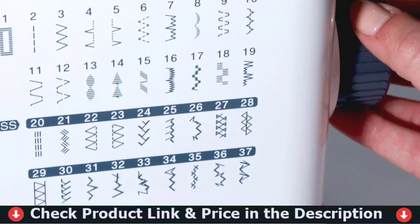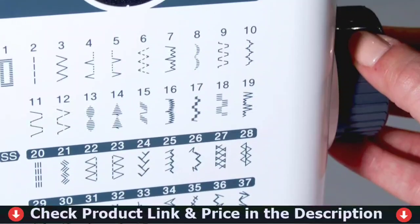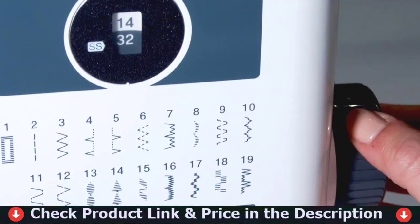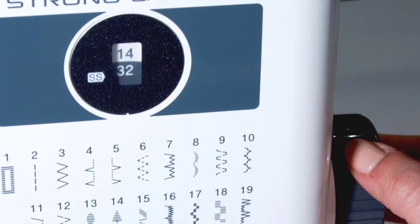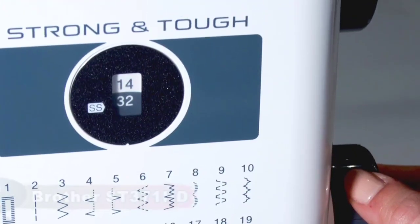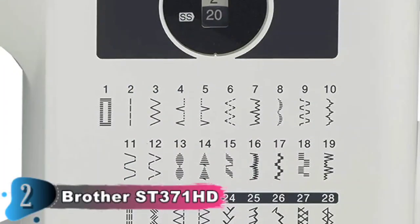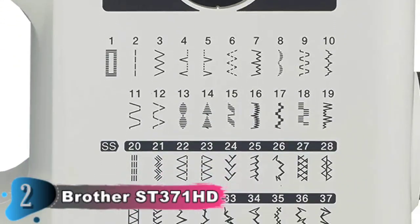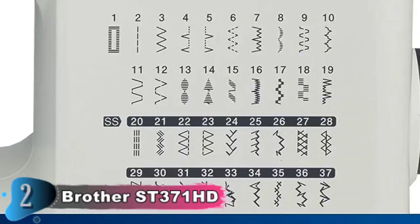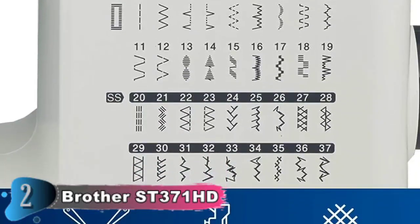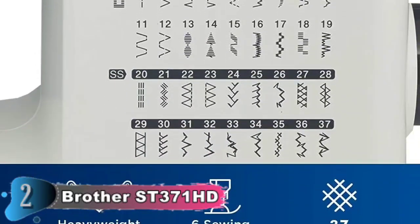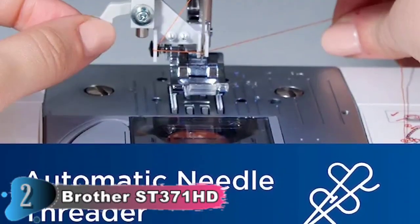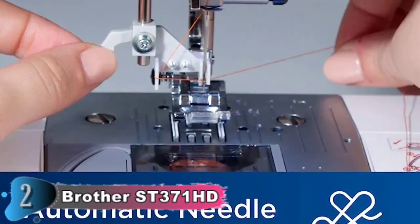The ST371HD heavy-duty sewing machine includes 6 sewing feet, instructional DVD, manual and more. This free arm sewing machine is perfect for a wide range of everyday sewing projects, and users from beginning to advanced. The ST371HD comes with Brother at Your Side support offering free technical support via online, live chat or phone for the life of your machine.